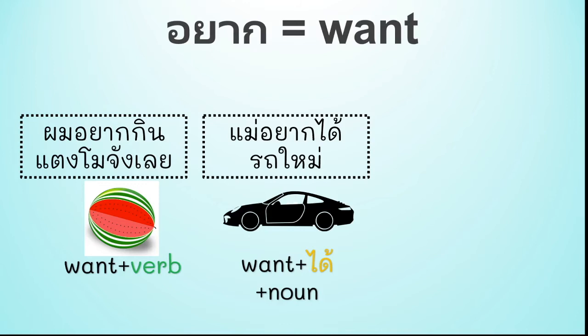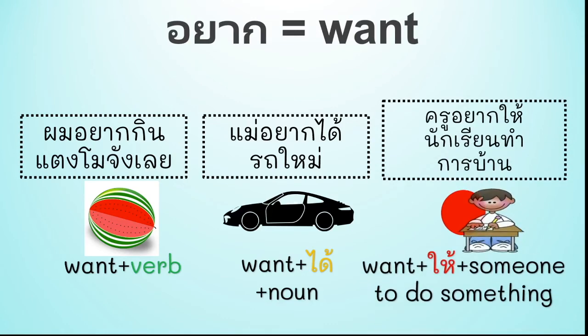แม่อยากได้รถใหม่ — Mom wants a new car. So when you say อยาก followed by a noun, you need to say the word ได้ before the noun. Next: อยาก plus ให้ means 'let someone do something.' ครูอยากให้นักเรียนทำการบ้าน — I want you to do your homework.